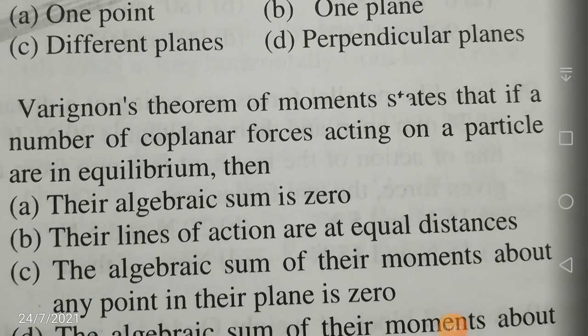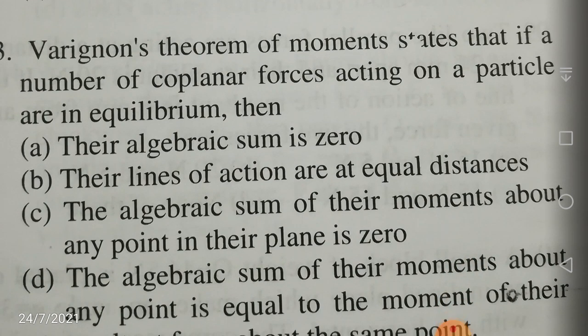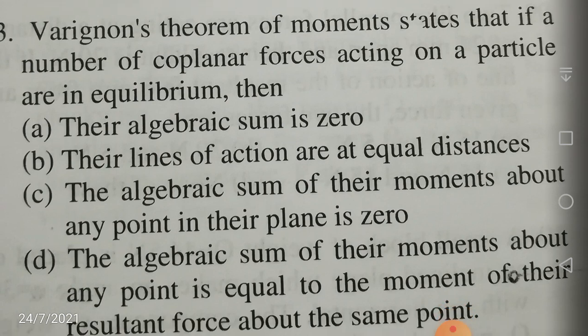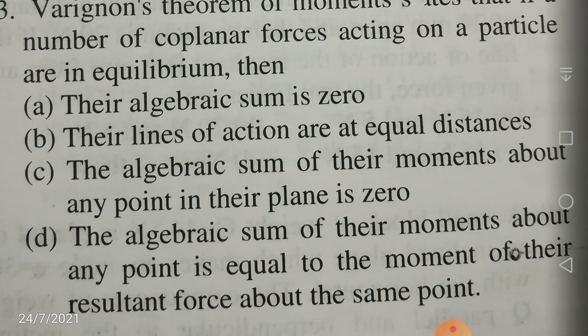Next question: Varignon's theorem of moments states that if a number of coplanar forces acting on a particle are in equilibrium. Neither A, B, nor C are correct — their algebraic sum is 0 is not correct, their lines of action are at equal distances is also not correct, and the algebraic sum of their moments about any point in their plane is 0 is also not correct. This Varignon's theorem talks about the moments of the resultant and the constituting forces. The moment of the resultant about a point in the plane of the forces should be equal to the algebraic sum of the moments of the individual forces about the same point.